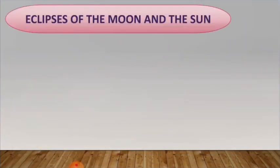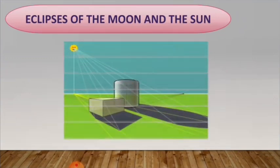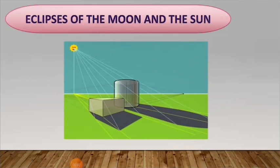Now children, let us learn about eclipses of the moon and the sun. An opaque object is one through which light cannot pass. When light falls on an opaque object, its shadow is formed. The Earth and the moon are opaque objects. When the sun's light falls on the Earth and the moon, their shadows are formed and they play hide-and-seek.